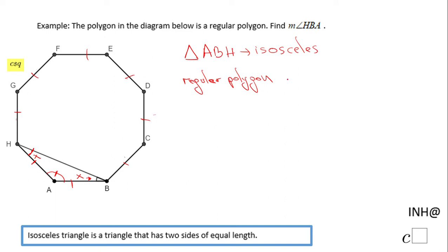For finding one interior angle, we're gonna use this formula: (n-2) times 180 divided by n, where n is the number of sides. This is the formula for one interior angle.